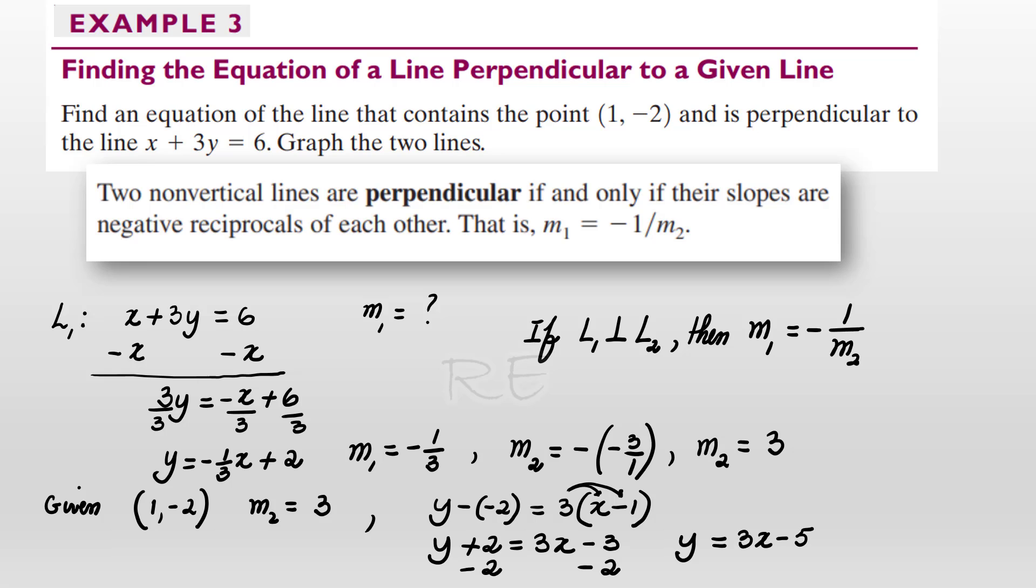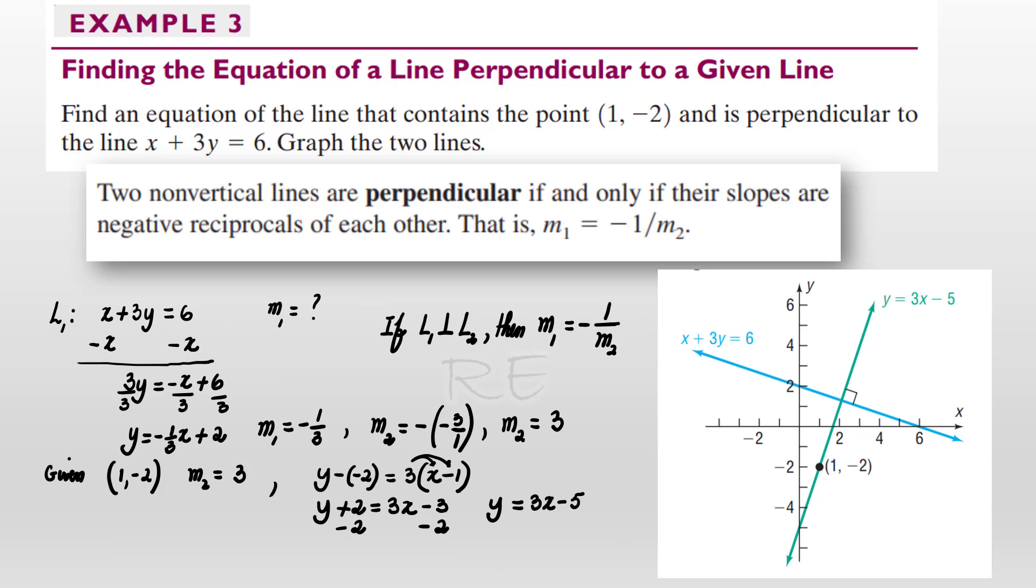Y equals 3X minus 5 and X plus 3Y equals 6 are perpendicular lines.